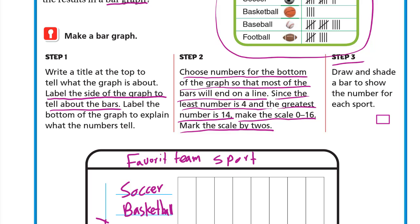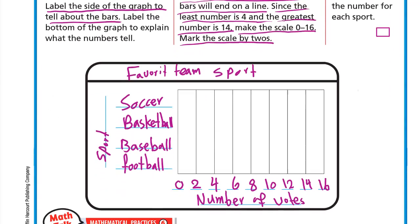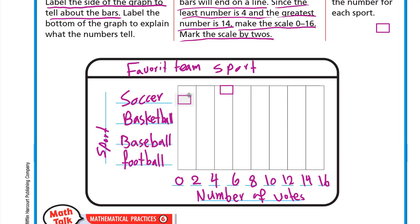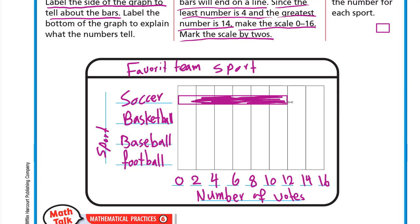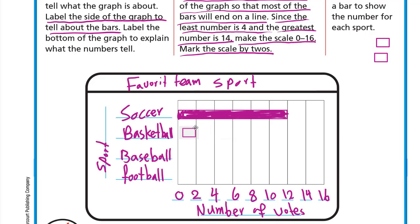Step number three: draw and shade the bars to show the number for each sport. The first sport is soccer, which is 12, so we draw the bar up to 12 and shade it. The next sport is basketball, which is 4, so we draw the bar to 4 and shade it.